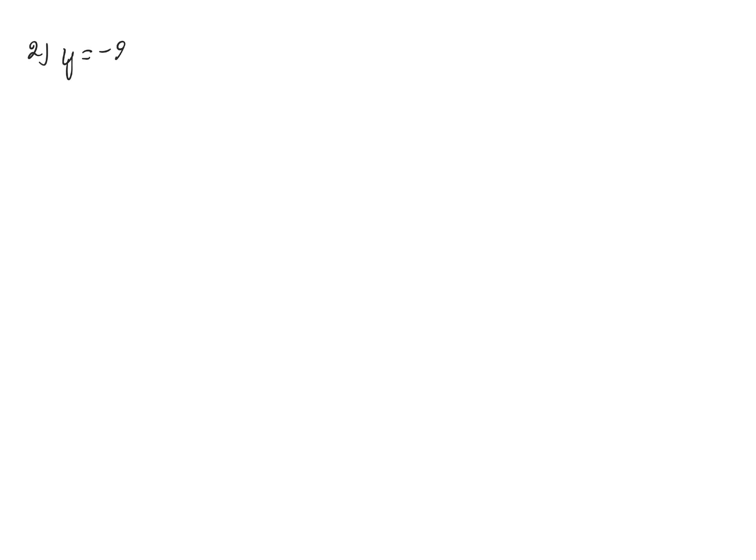For a line y equal to minus 2x plus 1, we get the following plot. What we see here is that the intercept is 1, so the intersection with the y-axis is also 1. We also have a slope of minus 2, so when we move 1 to the right, we move down by a value of 2.